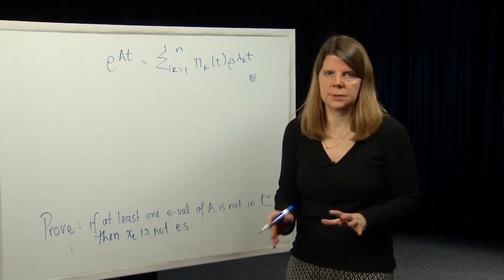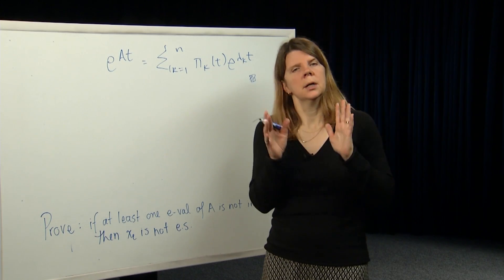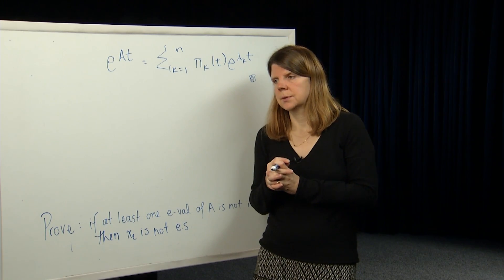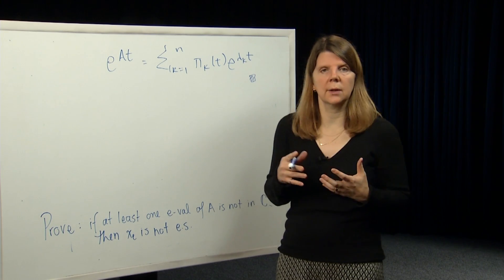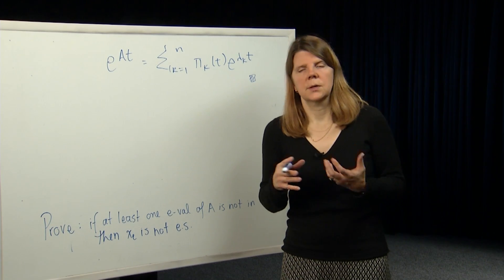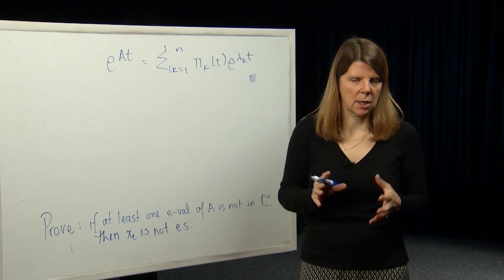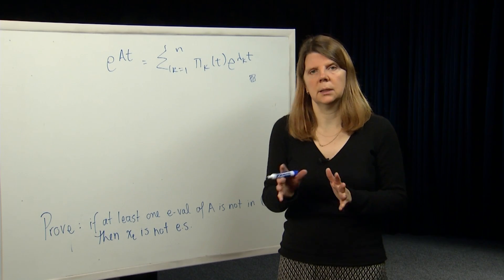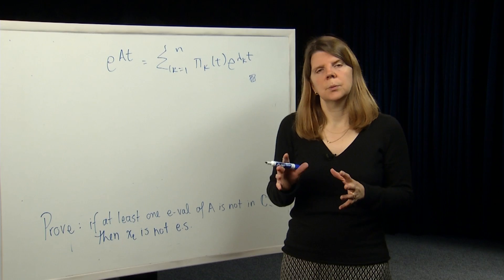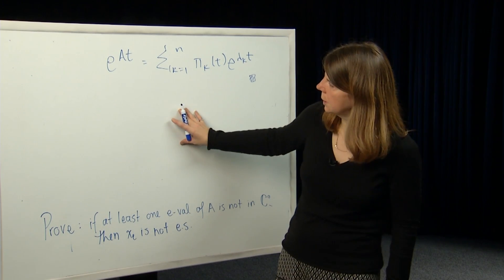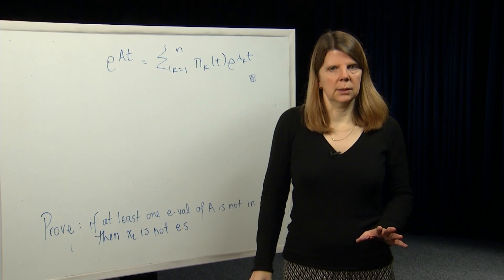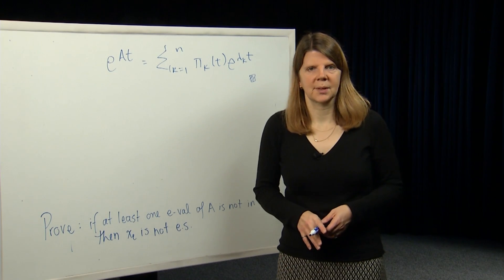So we've proven the result: exponential stability of x-dot equals Ax is equivalent to all eigenvalues of A being in the open left half plane. That's a nice and easy test — just look at the eigenvalues of matrix A. For linear time invariant systems, exponential and asymptotic stability are the same. In our next module, we'll talk about tests for stability and relate this to bounded input bounded output stability, discussing the relationship between internal and BIBO stability.